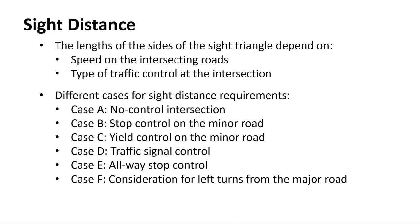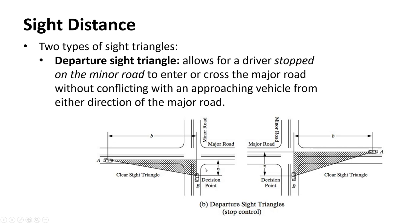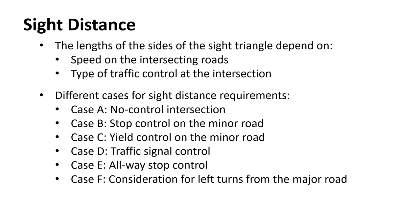The lengths of the sides of the sight triangle depend on the speed of the intersection roads and what kind of traffic control the intersection has — whether it's a yield or stop sign. If there are stops on the minor road and none on the major road, that's called a two-way stop. If everyone stops, it's a four-way or all-way stop. A yield-controlled minor road is still used in smaller subdivisions or rural areas.